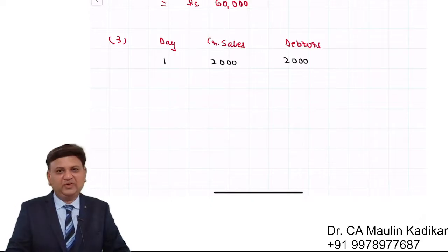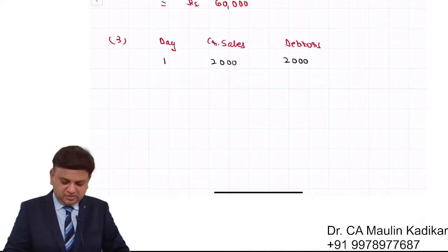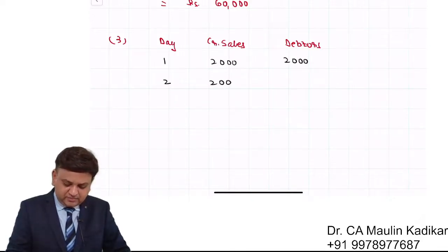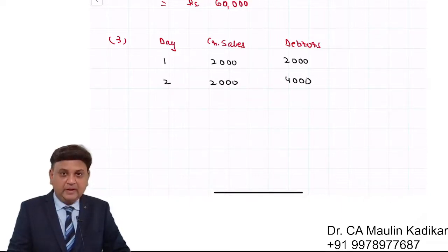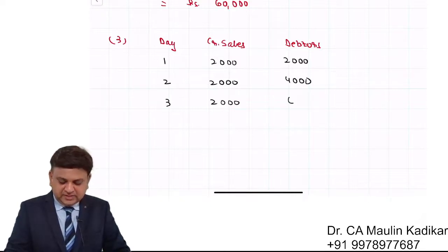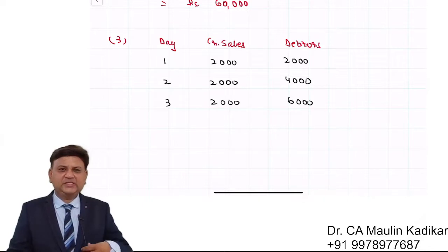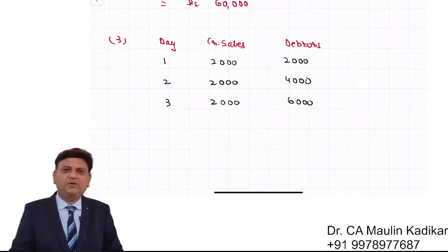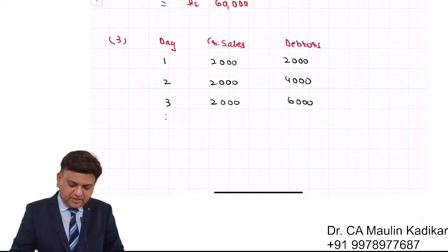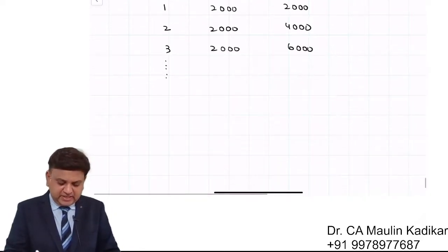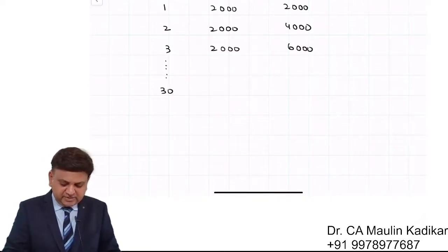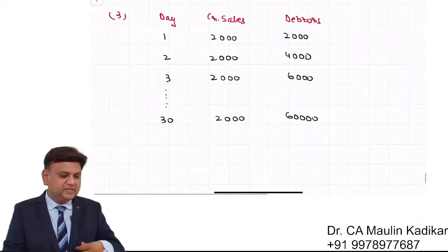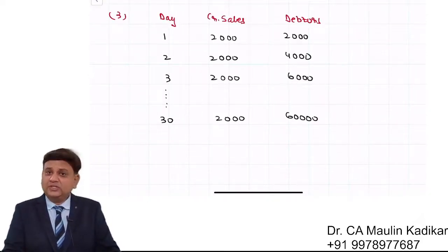On day one, debtors will be ₹2,000 — whatever the credit sales is. On day two, debtors are ₹4,000. On day three, ₹6,000. This way the debtors keep growing day by day. After 30 days of business, the amount of debtors would be ₹60,000, because the collection period is 30 days and during the first 30 days there is no collection.